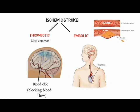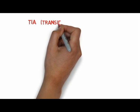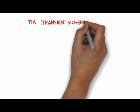In embolic stroke, the clot lodges in the narrower brain arteries and the blood supply is cut off from the brain due to the clogged vessels. There is one more entity called TIA, that is Transient Ischemic Attack, which is a warning sign of a possible future stroke and is treated as a neurological emergency.